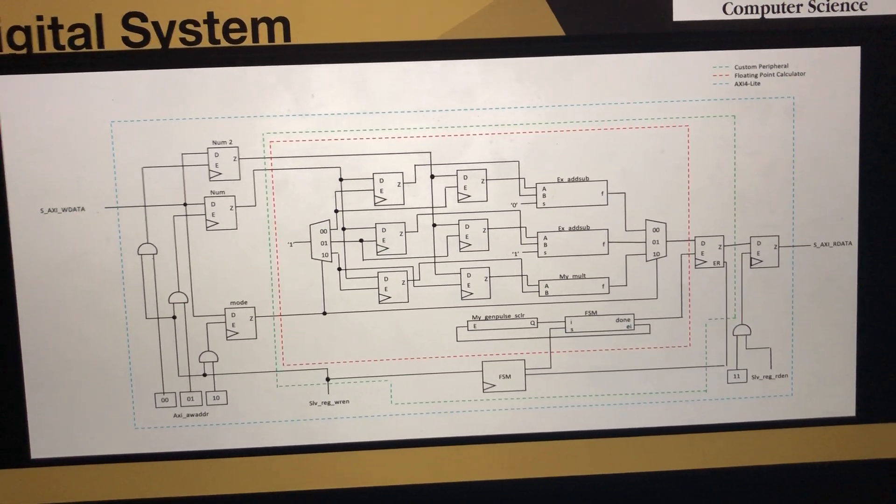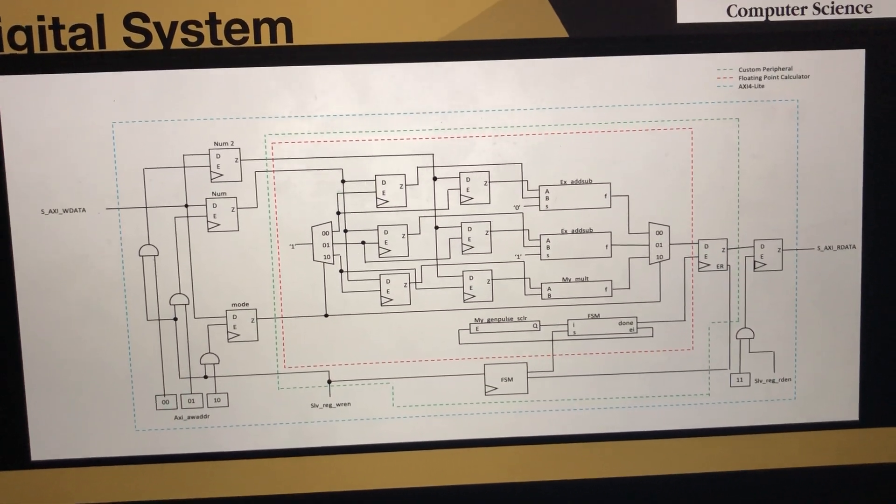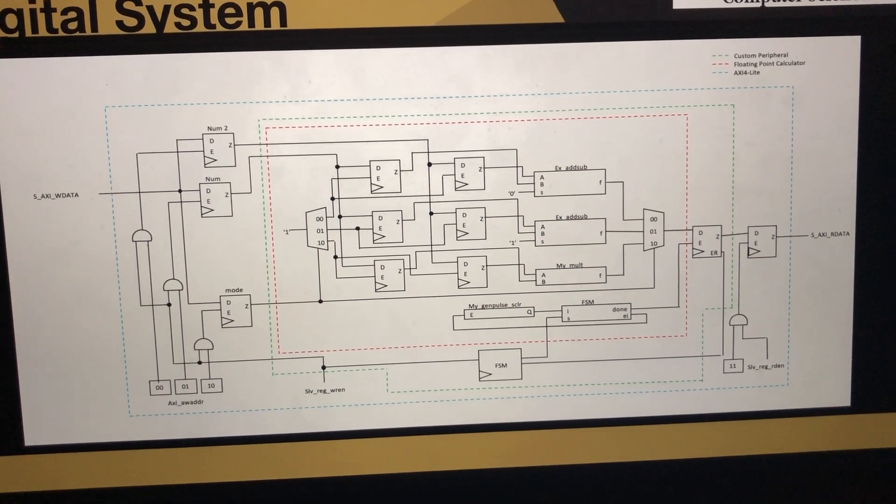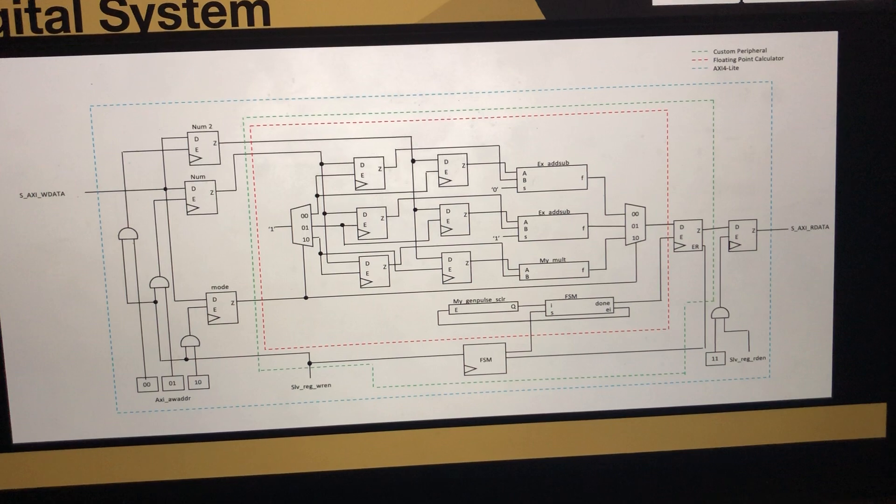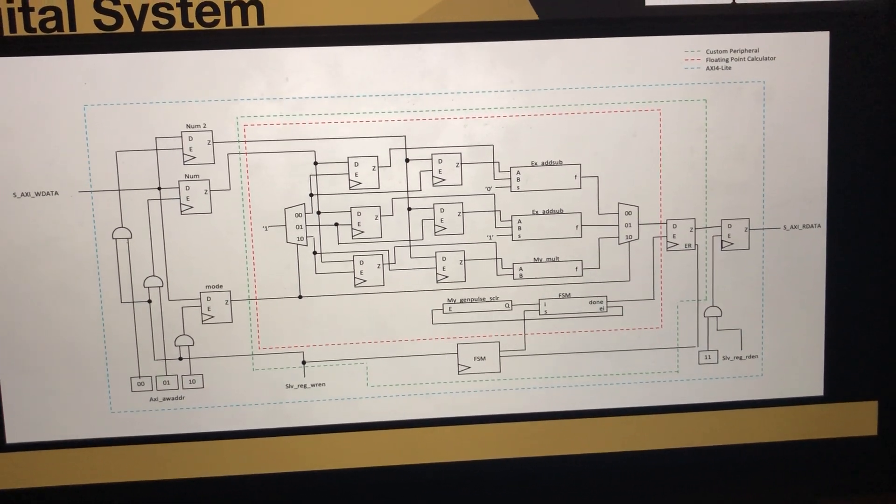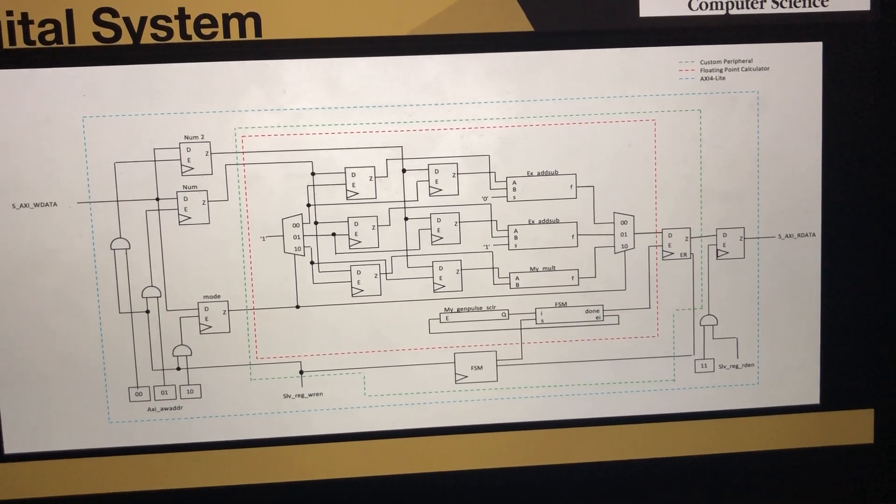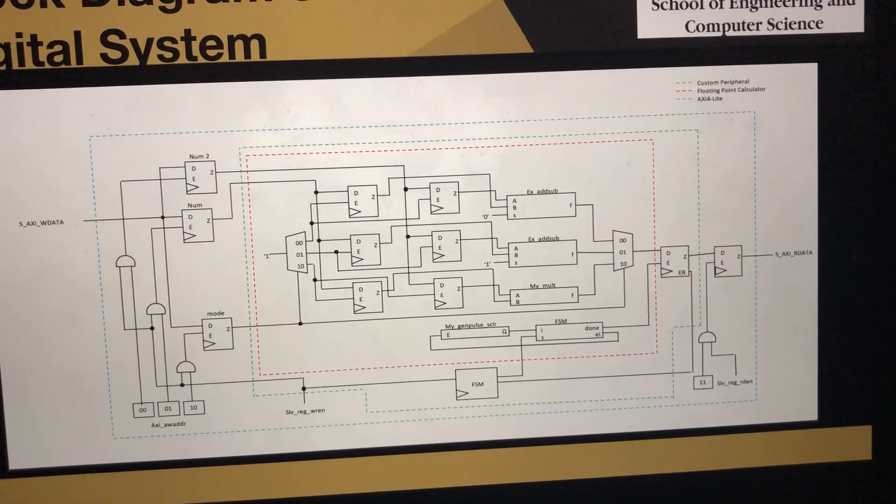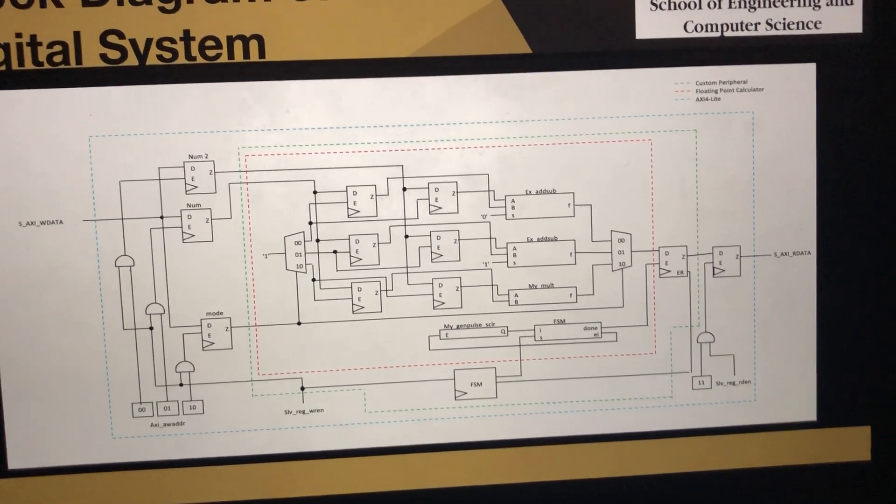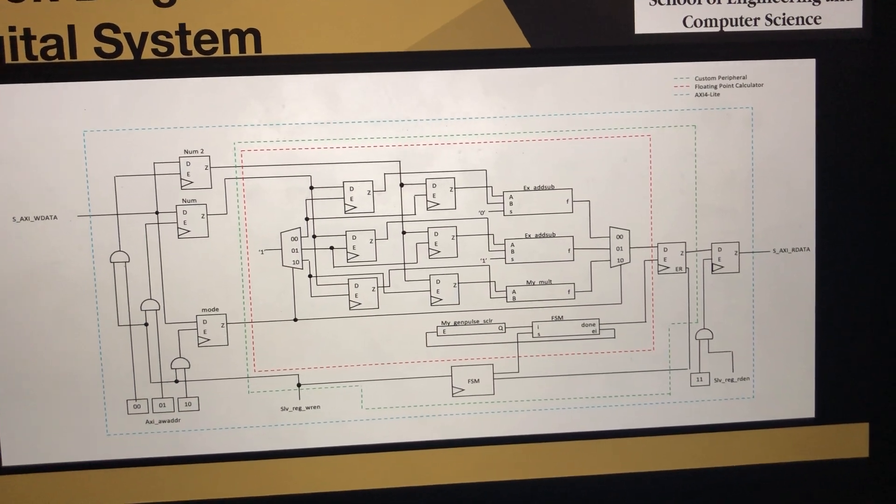You can see there are two FSMs in our system. The FSM in the floating point calculator controls when to start and stop the calculation. And the FSM in the custom peripheral communicates with the buffer register, the internal FSM, and the enable for the input registers.